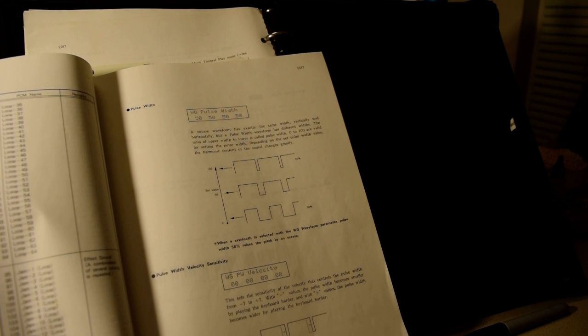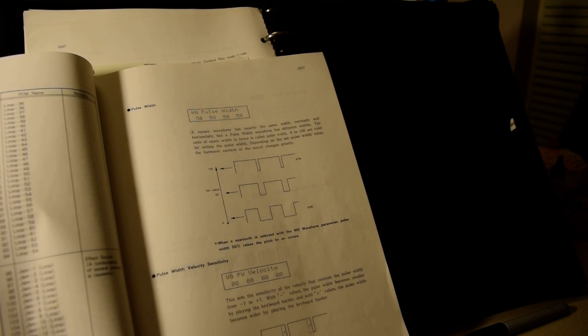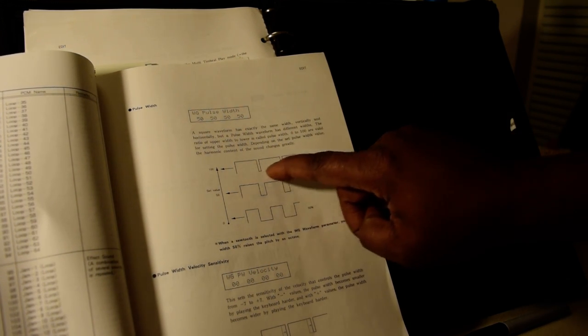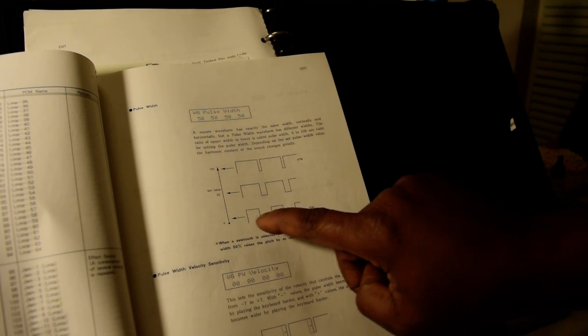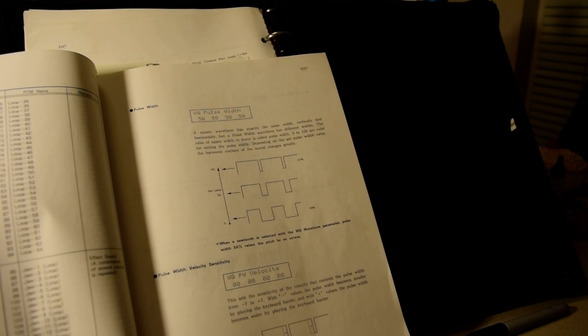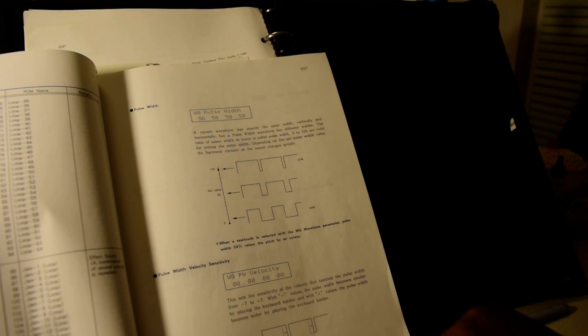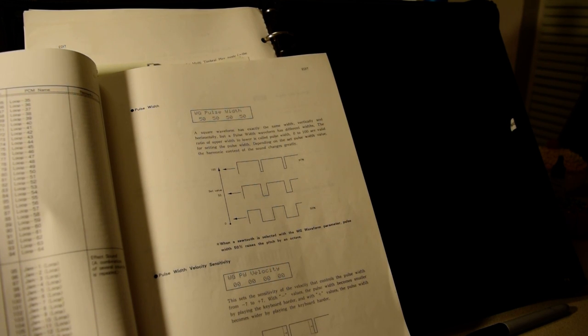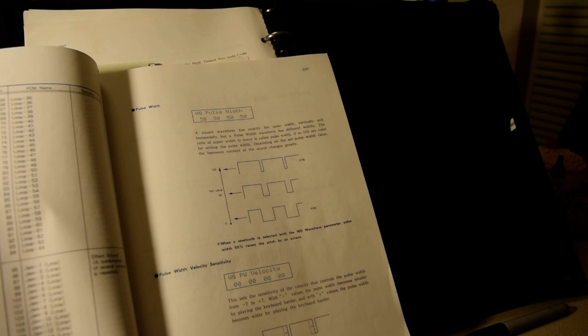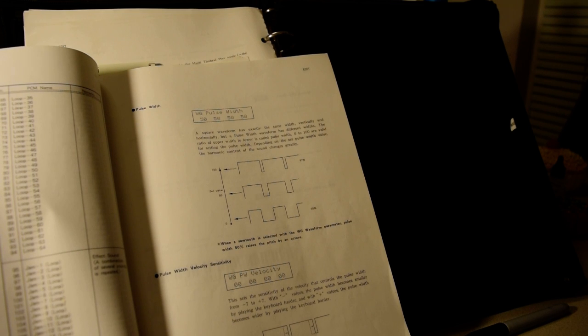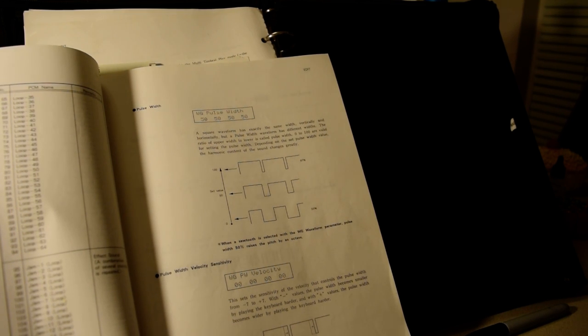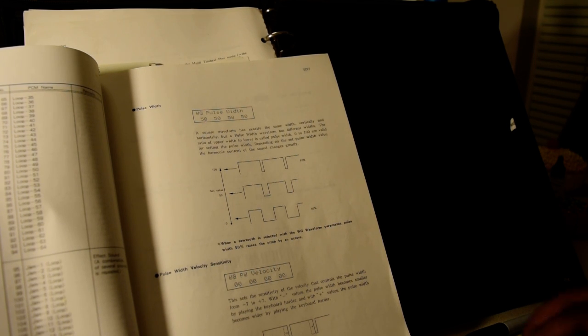This is called the WG pulse width. And as you see from the picture that you can change the WG by doing this right here. And this is the pulse width velocity sensitivity and you can do all that right there. It says the sensitivity of the velocity that controls the pulse width from negative seven to positive seven. With negative values the pulse width becomes smaller by playing the keyboard harder, and with the positive values the pulse width becomes wider by playing the keyboard harder.